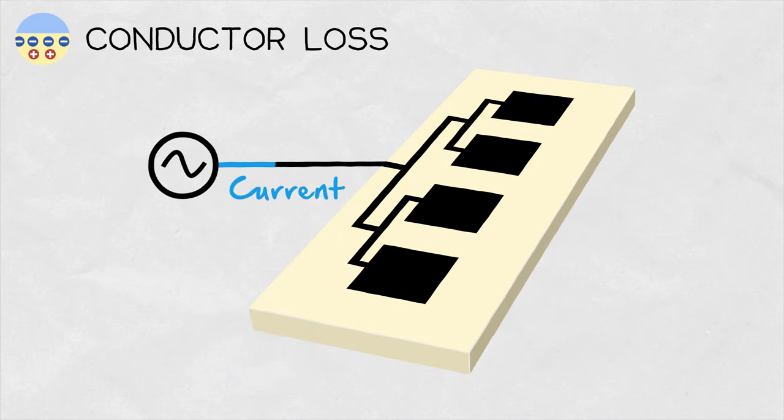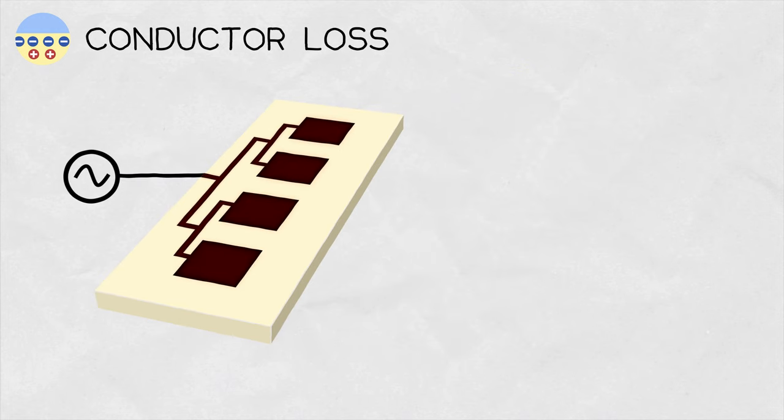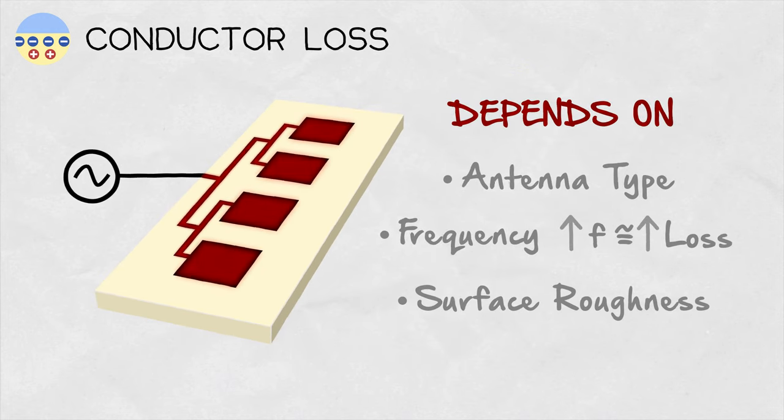Electrical currents flowing through the metal antenna parts with particular resistance cause some of the RF signal power to be lost in the metal. In practice, it depends on the antenna type, size and operating frequency what the conductor loss will be, but for most antennas, the conductor loss increases with frequency due to increasing skin effect, and at very high frequencies, higher surface roughness further amplifies the conductor loss.